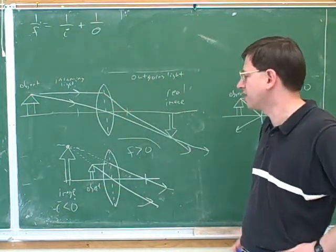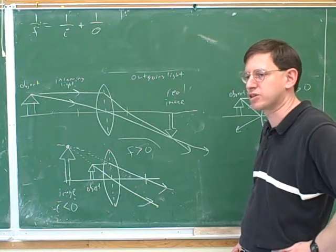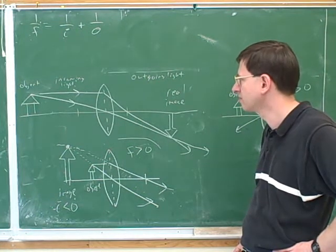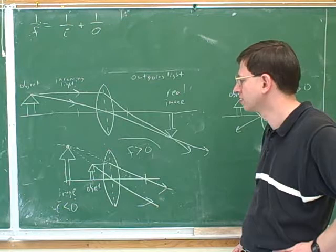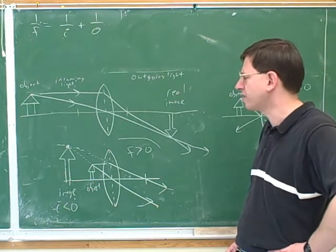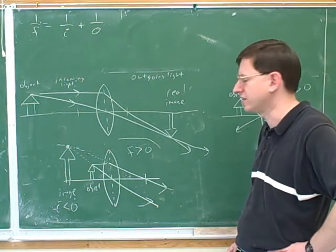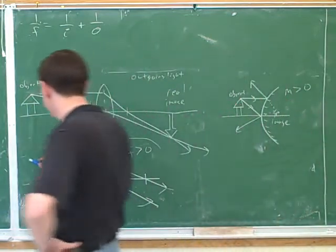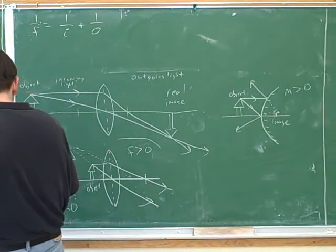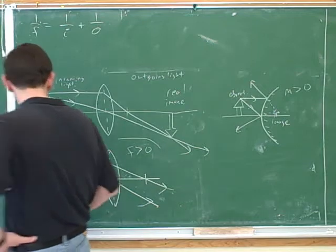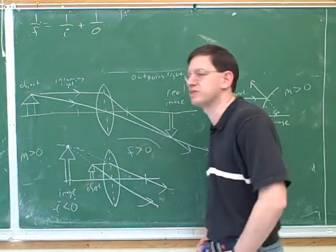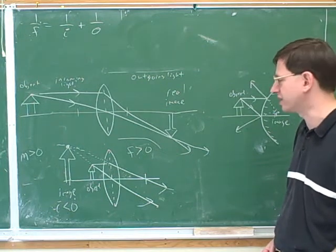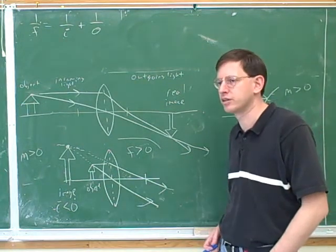Notice that f and i can have completely different signs. Is there any other information about variables we can get from this picture? It's an upright image. What variable does that tell us about, and what does it tell us about it? It tells us about m. What does upright tell us about m?